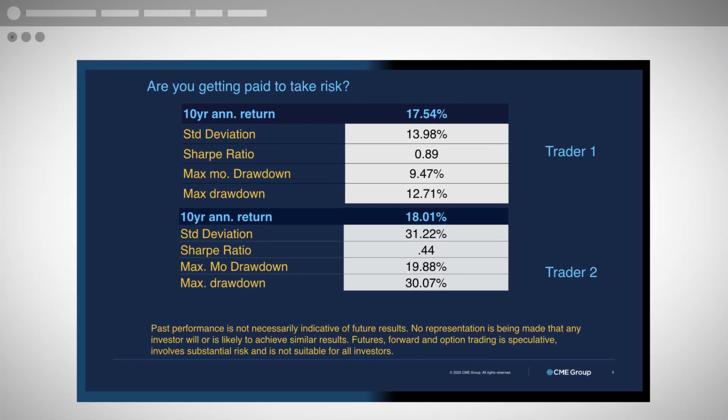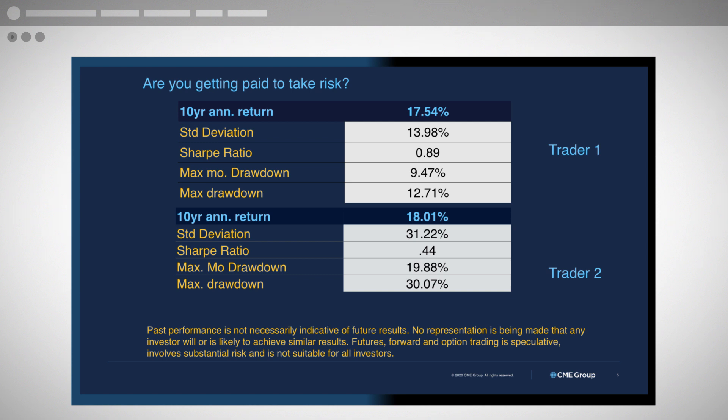Are you getting paid to take risk? Let's look at two traders with actual track records. Trader One has 10-year annualized returns of 17.54%. Standard deviation is a way to measure risk — it can range from 1-2% to 35%, 50%, even 100% in some cases. A standard deviation of about 13.98% is about average, close to the long-term U.S. stock market standard deviation of around 14-15%. Trader One's Sharpe ratio is 0.89. The maximum monthly drawdown is 9.47%, and the maximum annual drawdown is 12.71%.